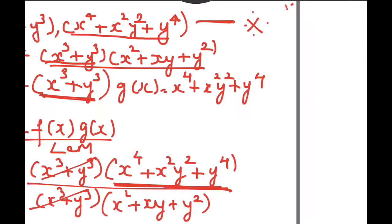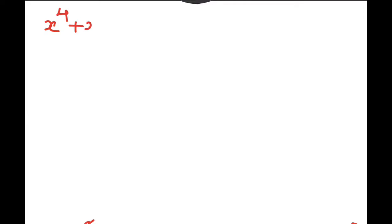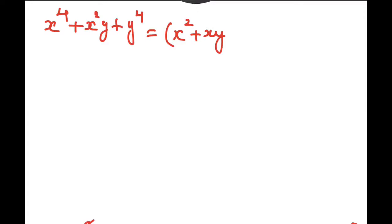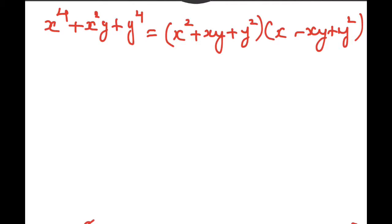Using the formula: x to the power of 4 plus x squared y squared plus y to the power of 4 is equal to x squared plus xy plus y squared into x squared minus xy plus y squared. This formula makes it easy to solve.